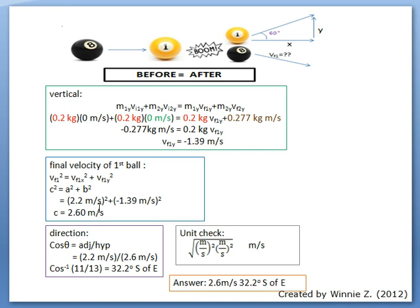After solving for the velocity, we need to find the direction too. We use cosine theta, one of the basic trigonometry ratios. Cosine theta is equal to adjacent over hypotenuse. Adjacent is the value of x, which is 2.2 m per second, and hypotenuse is the velocity that we just solved for, 2.6 m per second. Cosine theta is equal to 11 over 13, and the inverse of cosine is 32.2 degrees and its direction is south of east.